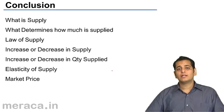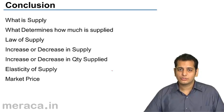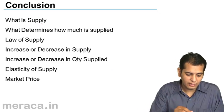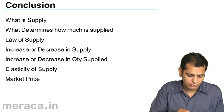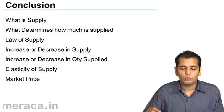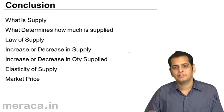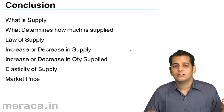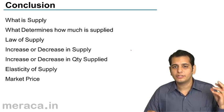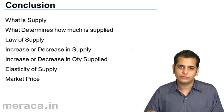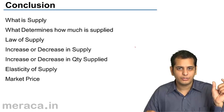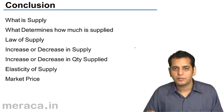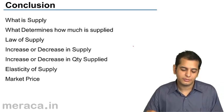Let's quickly conclude what we have done in the chapter on supply. We've seen what supply is: supply is the quantity of goods offered for sale at a particular price during a particular period.